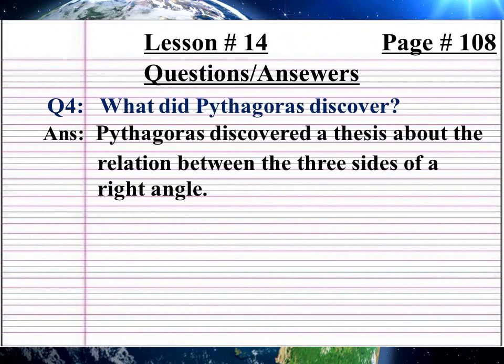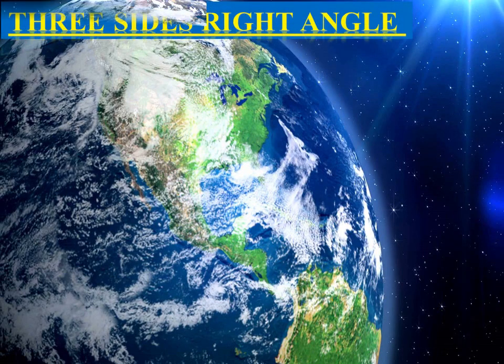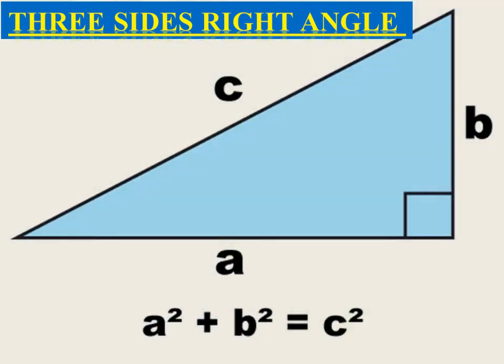Question 4: What did Pythagoras discover? (Urdu: Pythagoras ne kya daryaft kiya?) Answer: Pythagoras discovered a thesis about the relation between the three sides of a right angle. (Urdu: Pythagoras ne ek nazriya daryaft kiya — right angle ke teen sides ke darmiyan relation.) Look at the picture: Three sides of a right angle.